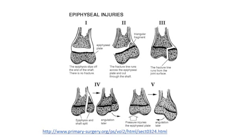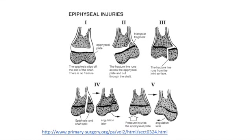The fifth type of injury is where the epiphyseal plate is crushed. This often happens at the ankle or the knee. Since the epiphyseal plate is crushed, it causes at least part of the epiphyseal plate to close early.